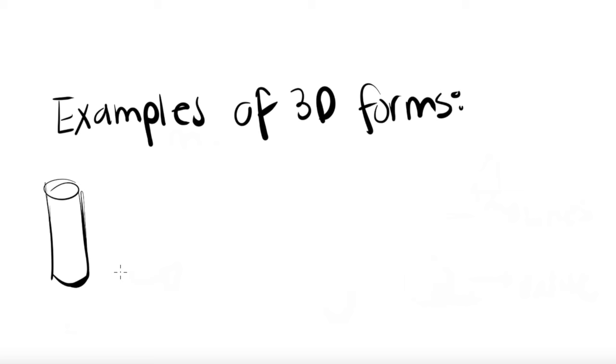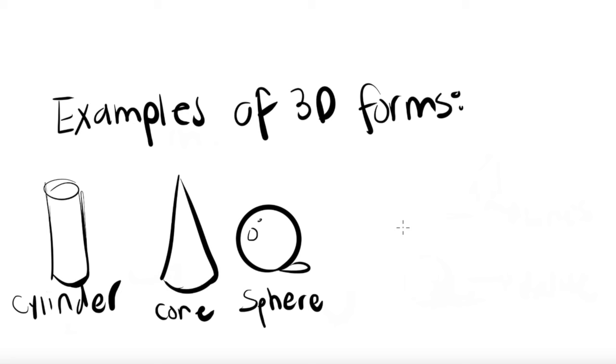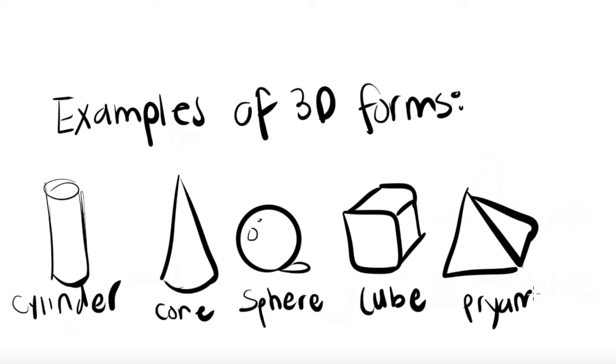There are lots of different names for three-dimensional forms. Some examples include a cylinder, a cone, a sphere, a cube, and a pyramid, just to name a few.